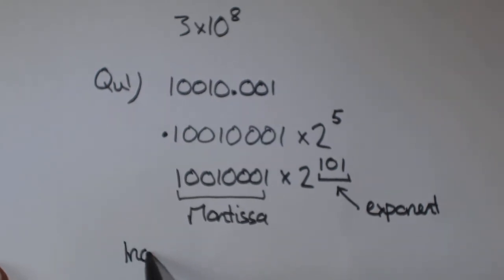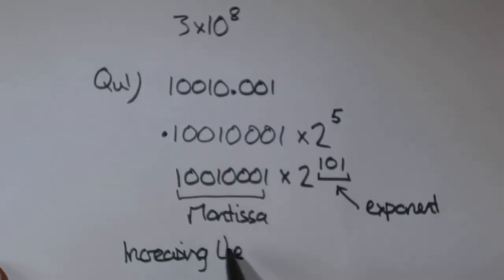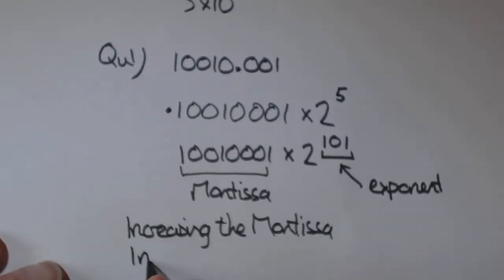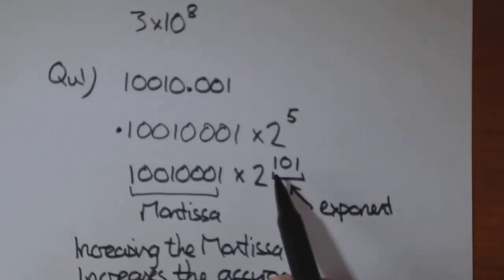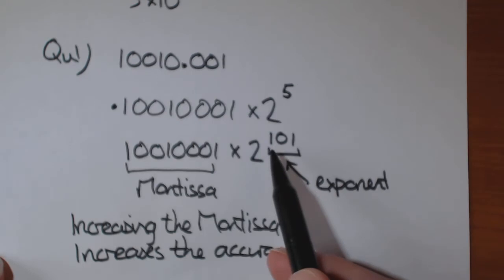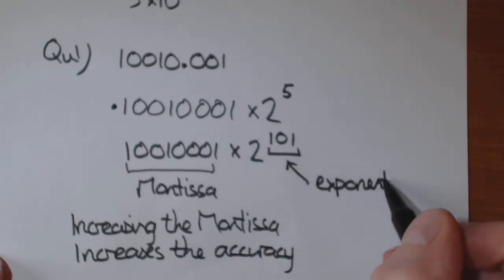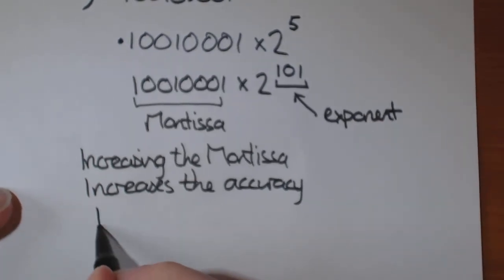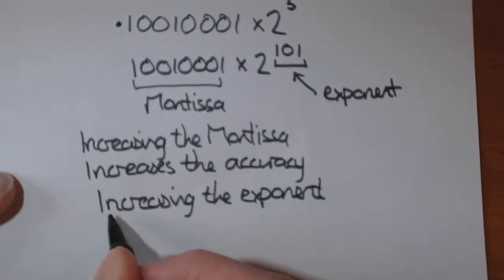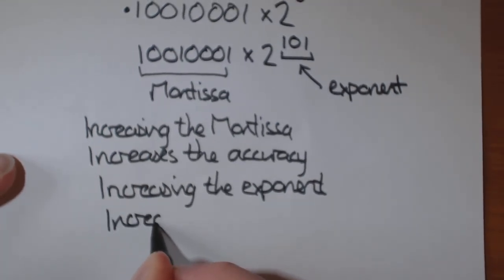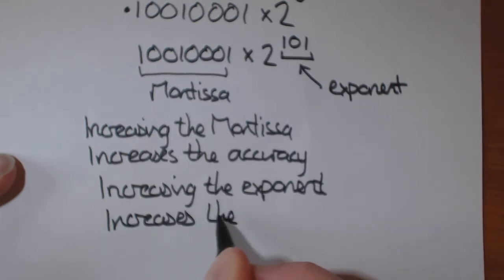So if we increase the number of bytes that we use to save the exponent, we can actually increase the range. So increasing the exponent increases the range.